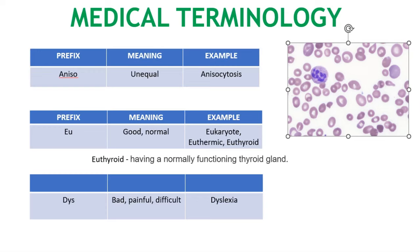EU or U means normal or good. If someone has a normally functioning thyroid gland, that is an example of EU — euthyroid.